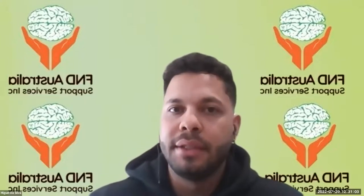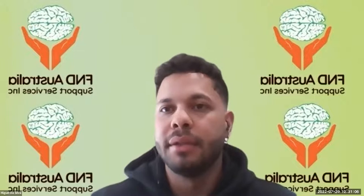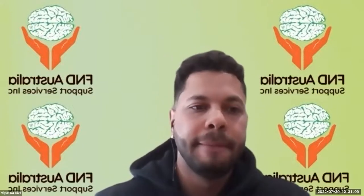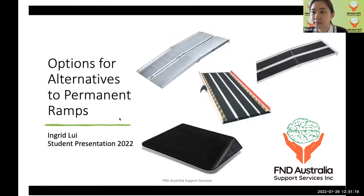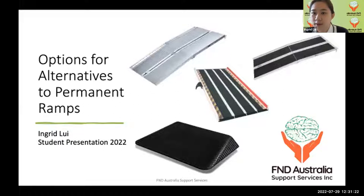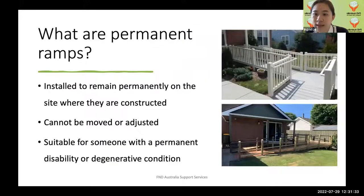We'll move on to Ingrid's section — if there are questions, please put them in the chat or ask at the end. Ingrid introduces some options for alternative ramps as alternatives to permanent ramps. Permanent ramps are installed to remain permanently on site — they cannot be moved or adjusted, and are suitable for someone with a permanent disability or degenerative condition.